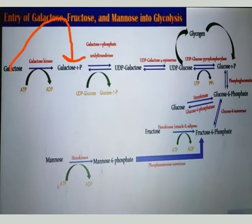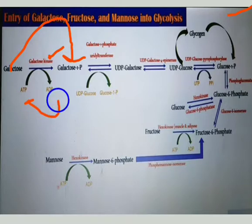Galactose is converted into galactose-1-phosphate with the help of the enzyme kinase. Kinases are responsible for the transfer of phosphate groups. A molecule of ATP is utilized and converted into ADP. So galactose is converted into galactose-1-phosphate by the addition of one phosphate group.